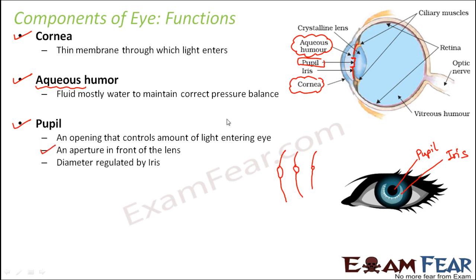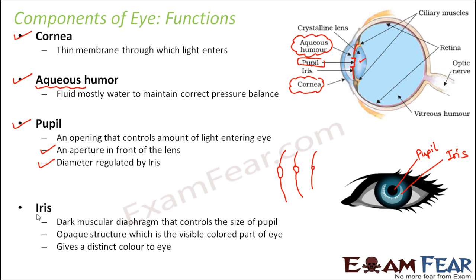The pupil is an aperture in front of the lens — this opening is just in front of the lens so that light can enter through the pupil and pass through the lens. The diameter of the pupil is regulated by the iris. The iris is muscular in structure, which is why it can contract and expand to control the size of the pupil. However, iris is an opaque structure — light cannot pass through it — so whatever light enters the eye must enter through the pupil. The iris also gives a distinct color to our eye: some people have blue eyes, some have brown eyes, some have black eyes — all these different eye colors are due to the different colors of the iris.